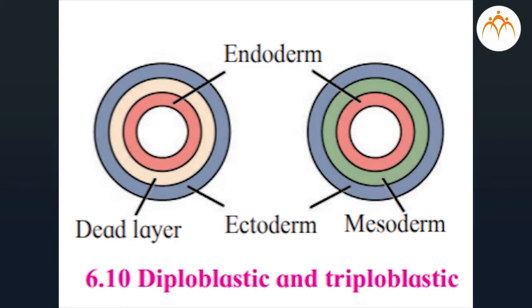Germinal layers: in the case of multicellular animals, germ layers are formed during the initial period of their embryonic development, and from those germ layers different tissues are formed in the body. In some animals, only two germ layers — endoderm and ectoderm — are formed. Example: cnidarians. Some animals have three germ layers — endoderm, mesoderm, and ectoderm. This middle layer or mesoderm gives rise to the body cavity.